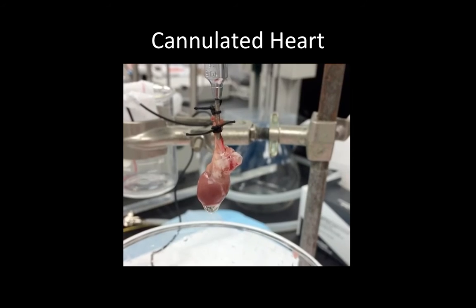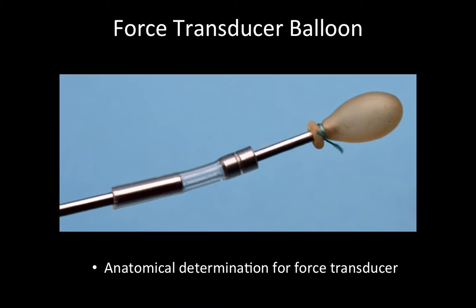The next step in the lab was to set up our force transducer, using a force transducer balloon. We would insert this balloon into the left atria, through the left AV valve, into the left ventricle. First we had to make a small incision on the left atria. Identifying the left atria versus the right atria is very difficult — the heart looks very similar when taken out of the body. We got around this by wetting our gloves with mammalian ringer solution and feeling the heart; the left ventricle is much more muscular than the right. Once we had our anatomical bearings, we made a small incision, inserted the deflated balloon into the left atria, through the left AV valve, into the left ventricle, and inflated it. When the left ventricle contracted, it pushed on the balloon and our force transducer got a reading.